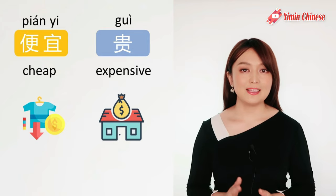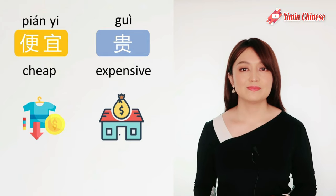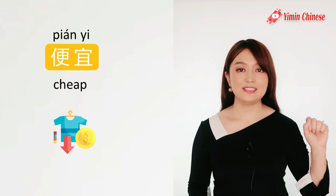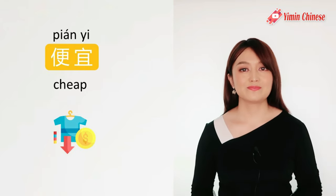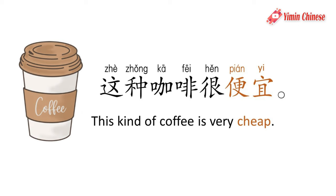好, 上一组, next pair: 便宜和贵, cheap and expensive. 便宜, cheap — 宜 is a neutral tone in real life speaking: 便宜. 比如说, 这种咖啡很便宜, this kind of coffee is very cheap: 这种咖啡很便宜.